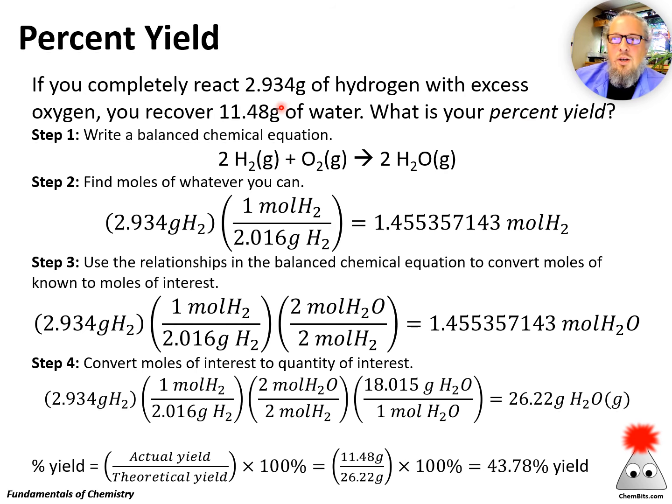This is no different. But we've got a theoretical yield, which we need to find using our four steps of stoichiometry process. This whole thing is just the same as the last slide, just working through all the steps. So 26.22 grams is the theoretical yield if we use up all this 2.934 grams of hydrogen. The actual yield is how much we actually recover. So if we take the actual yield divided by the theoretical yield times 100, you get the percent yield. This is 43.78 percent yield.